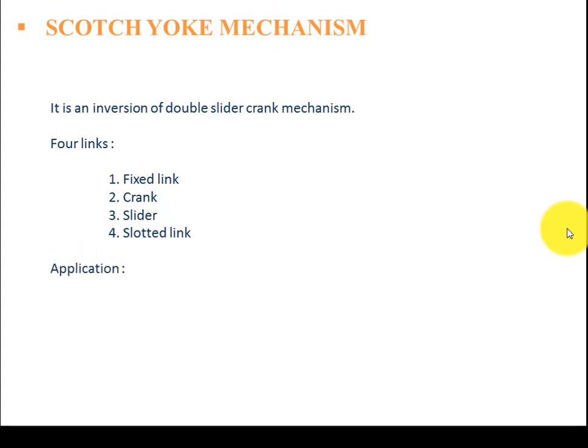Here we will see what are the applications. So the scotch yoke mechanism gives us perfect harmonic motion and it is used to convert the rotary motion into the reciprocating motion.